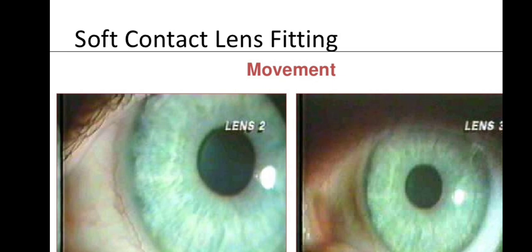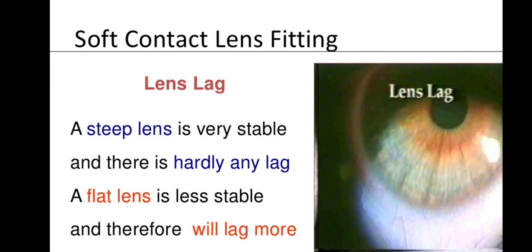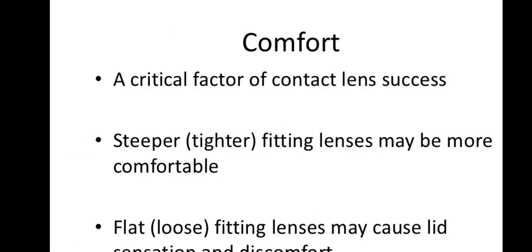On a flat lens, lag is visible: when the patient looks up the lens moves down; when looking right, the lens moves left; when looking down, the lens moves up. A steep lens is very stable with hardly any lag. A flat lens is less stable, with more lag. The comfort factor is critical: a steeper, tighter-fitting lens may feel more comfortable, while a flatter lens may cause a foreign body sensation and discomfort.